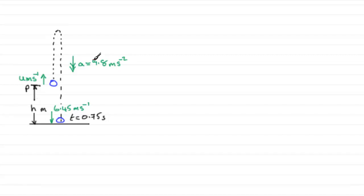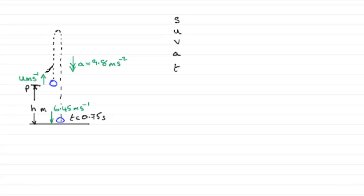For the first part, we've got to show that u equals 0.9. This is a typical SUVAT type question. So I would write out my variables: s for displacement, u for initial velocity, v for final velocity, a for acceleration, and t for time. It's important when we use these equations to put down a positive sense. Usually with questions like this, we go to the starting velocity and select that direction as the positive sense — so upwards is positive. There's nothing to stop you selecting downwards as positive, but I would really suggest you do upwards.